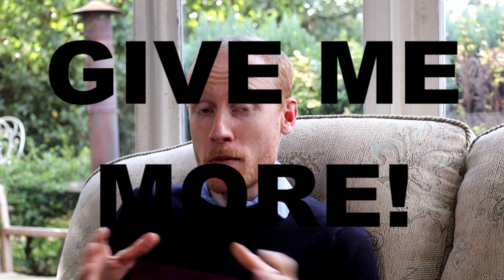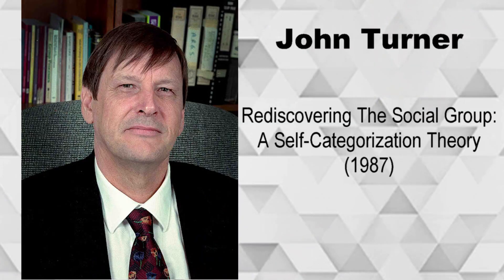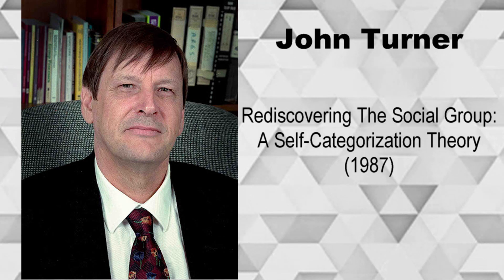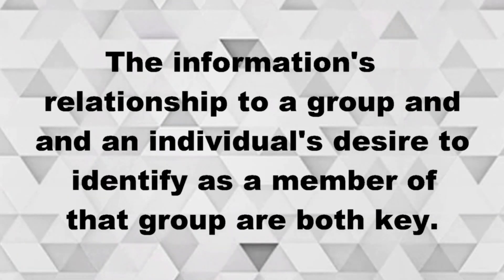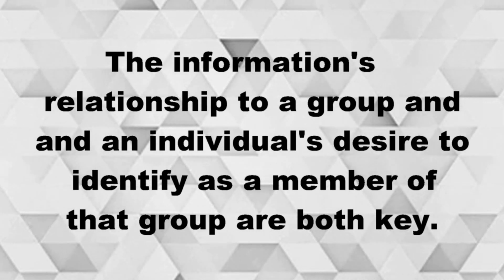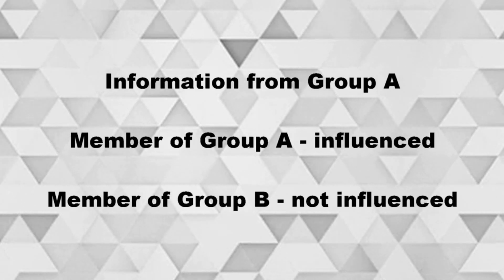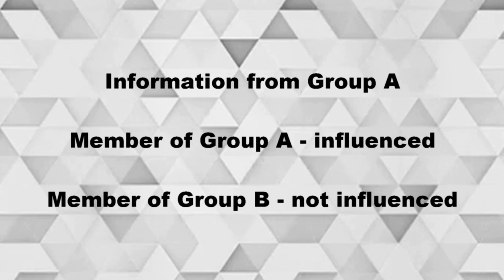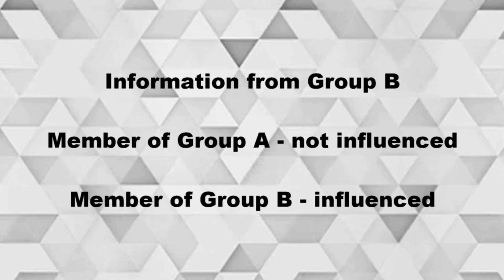Turner in 1987 gave us self-categorization theory. This explains why social influence isn't a blanket process — why aren't we all influenced in the same way when given the same information? Turner suggests that in order to be influenced by information, a person has to have a relationship to the group from which that information is coming. They will have an individual desire or lack of desire to identify as a member of that group, and therefore a corresponding interest in the information that group provides.